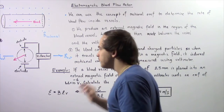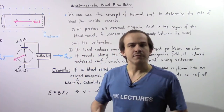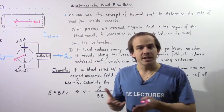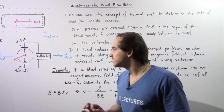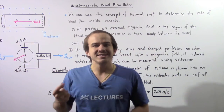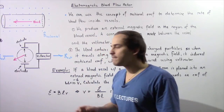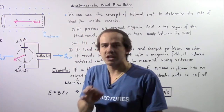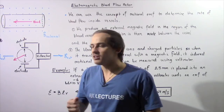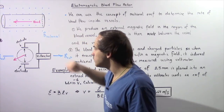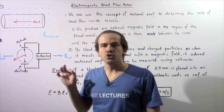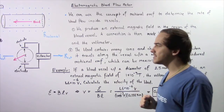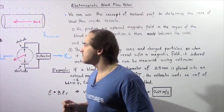As our blood flows, it contains different types of charged ions and charged particles, so the blood acts as if it were a moving conductor. When the blood flows, it induces a Motional EMF inside our wire between the two electrodes. This creates an induced electric current that flows through our voltmeter, and we can use that voltage to calculate the velocity of the blood.